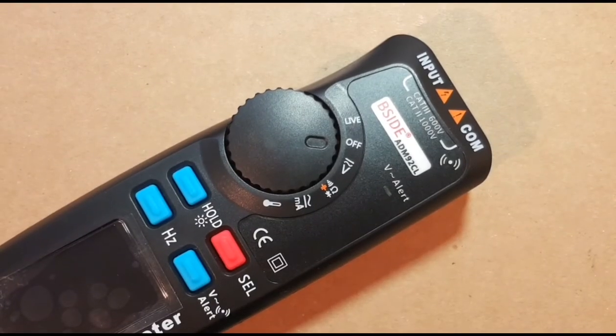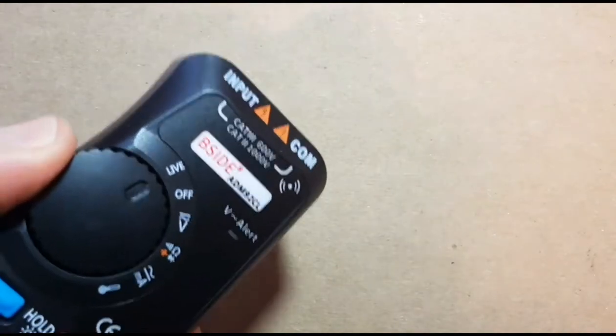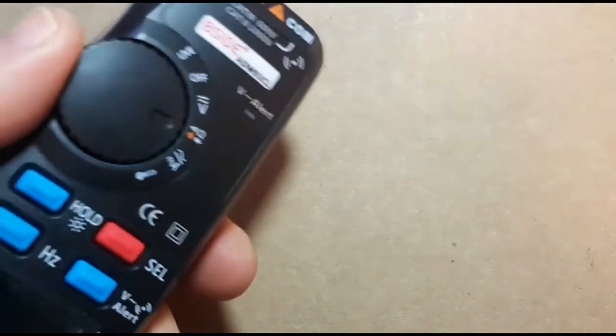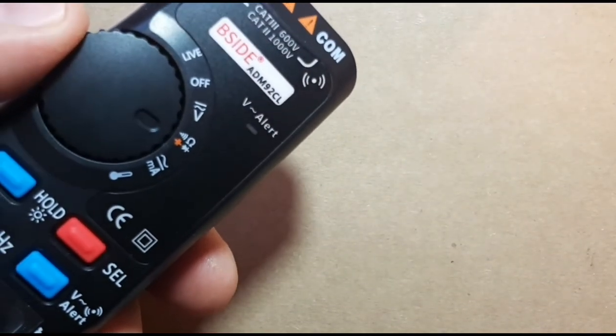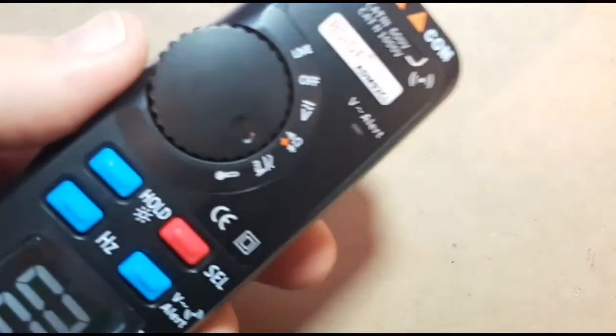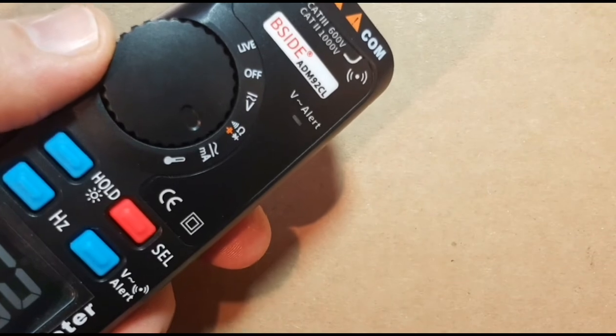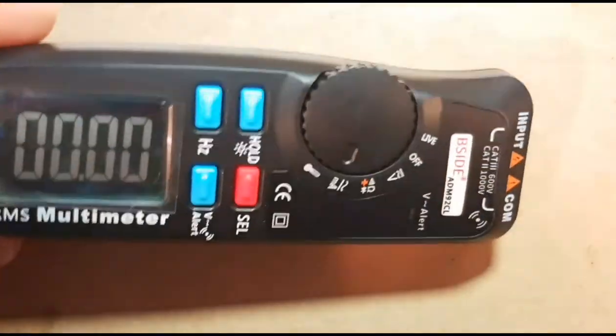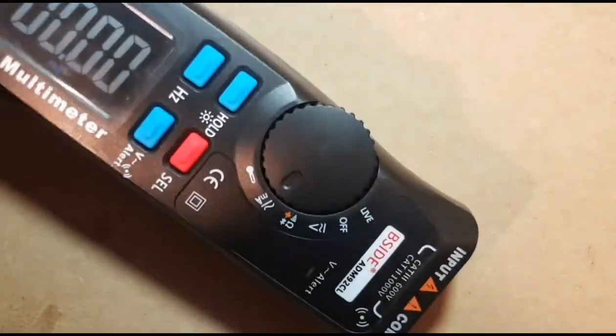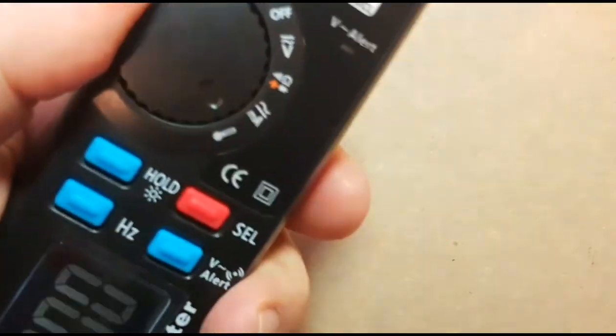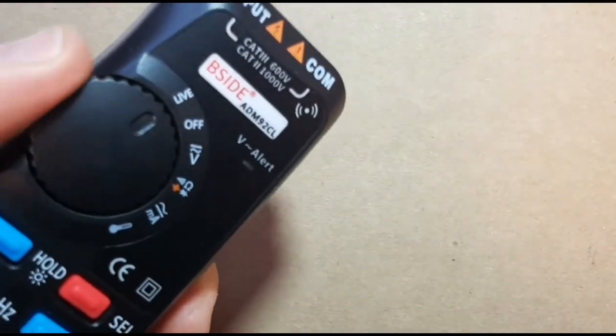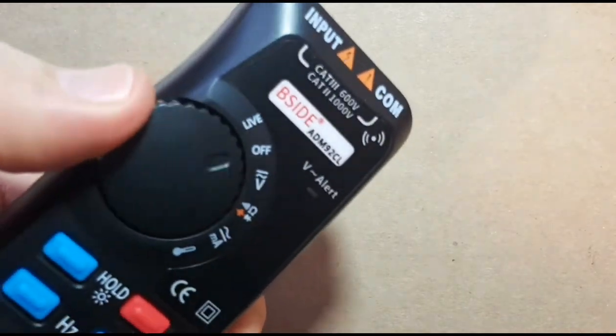Let's take a look at the feature set of the B-side ADM92CL. With the selector switch itself, you have a one-handed operation. Starts off with live, the off position, voltage AC-DC. Here we have the set functions, continuity, resistance, diode, and capacitance. Here we have the milliamp range. And the milliamp range, I believe, only goes to 200 milliamp. Yes, 60 to 200 milliamps. So pretty finite small range. I don't know how useful that'll be. But it is what it is. And at the bottom, we have the temperature mode. So all of it, as you can tell, easily accessible by a single turn of the button with your thumb.